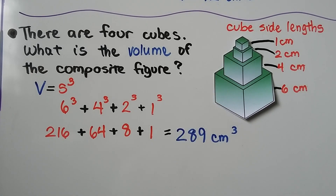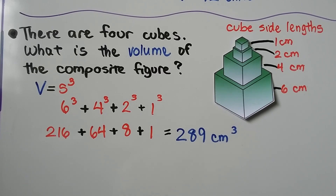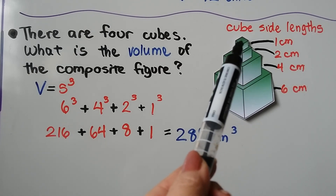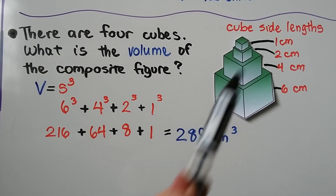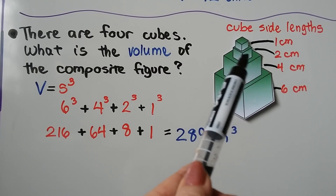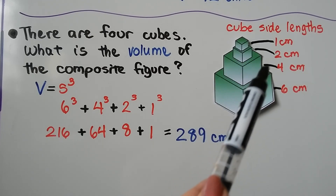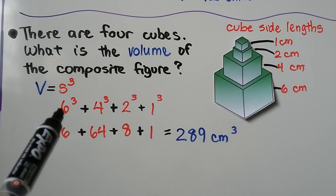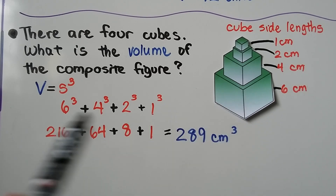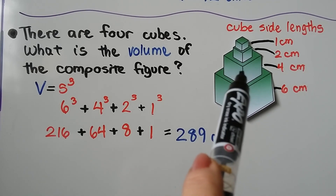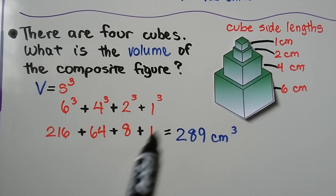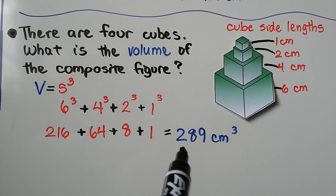Here we have four cubes stacked on top of each other. The smallest has a side length of 1 centimeter, so it's 1 by 1 by 1. The next is 2 by 2 by 2, then 4 by 4 by 4, and 6 by 6 by 6. The volumes are: 6 cubed equals 216, 4 cubed equals 64, 2 cubed equals 8, and 1 cubed equals 1. The total is 289 centimeters cubed for the composite figure.